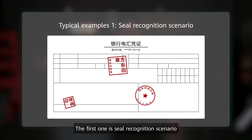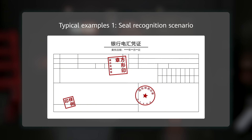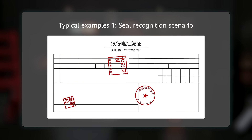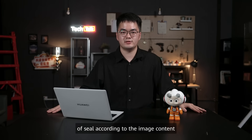The first is the field recognition scenario. Banks need to process company invoices and personal invoices. In specific identification, the model needs to identify the difference between the two types of invoices and answer questions about a certain type according to the image content.